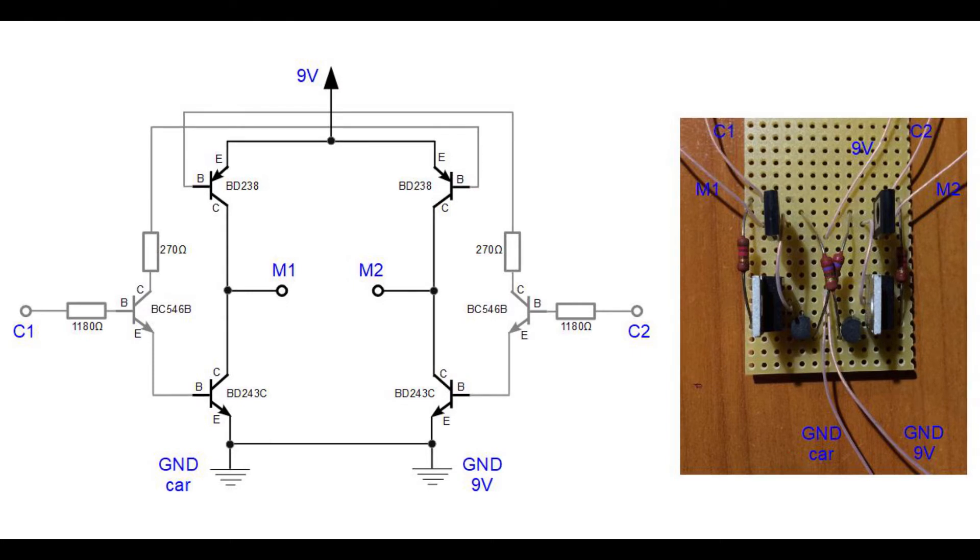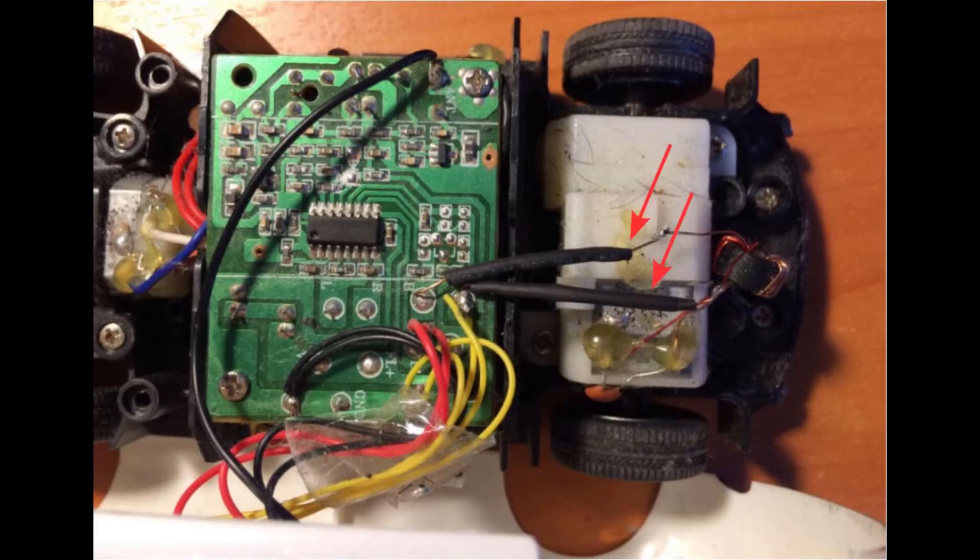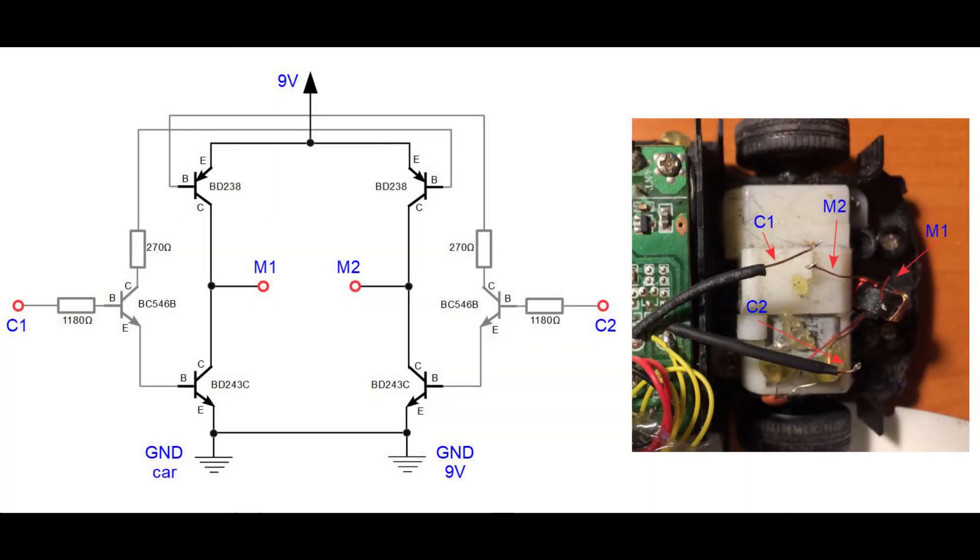Now I will show you step by step how to connect the H-bridge to your remote control car. First open your car. You should see two wires that are going from the circuit board to the motor. Cut those two wires in half. Now those two wires that are coming from the control board connect to H-bridge connection C1 and C2, and those two wires that are coming from the motor connect to H-bridge connection M1 and M2.